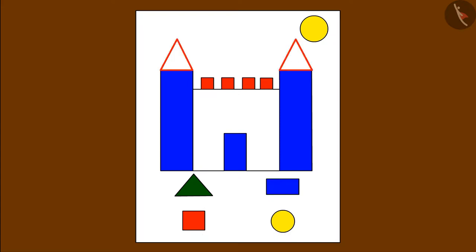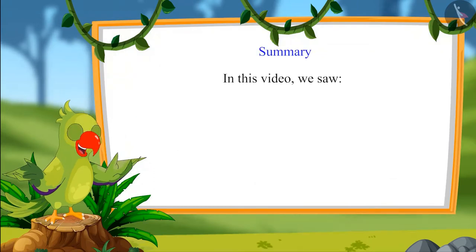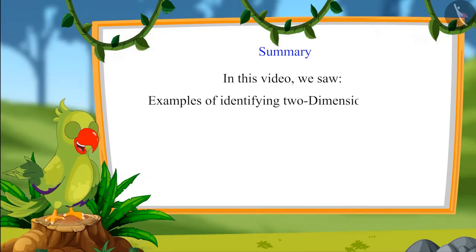Now, we come to the triangle. In the triangle, we have to fill the green color. Color is now filled in the whole picture. So, kids, in this video, we saw some examples of identifying two-dimensional shapes.